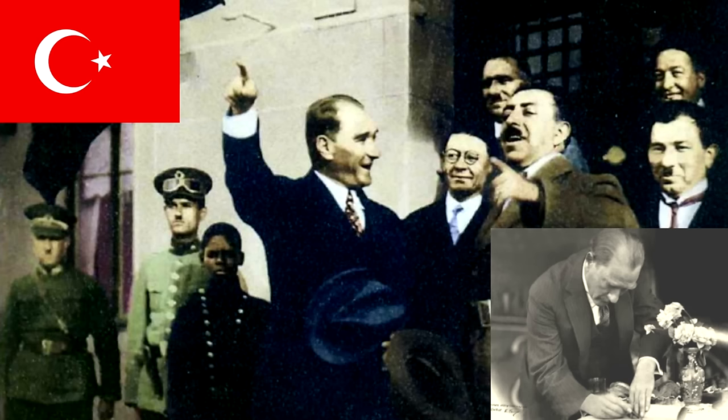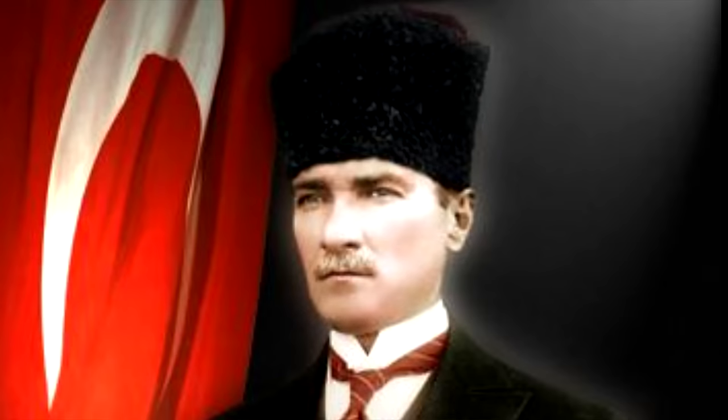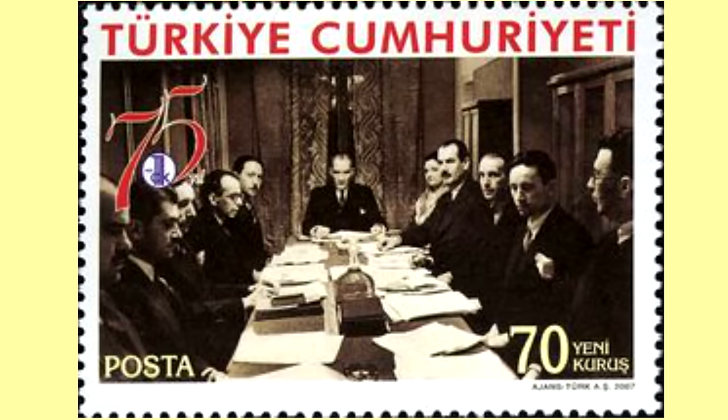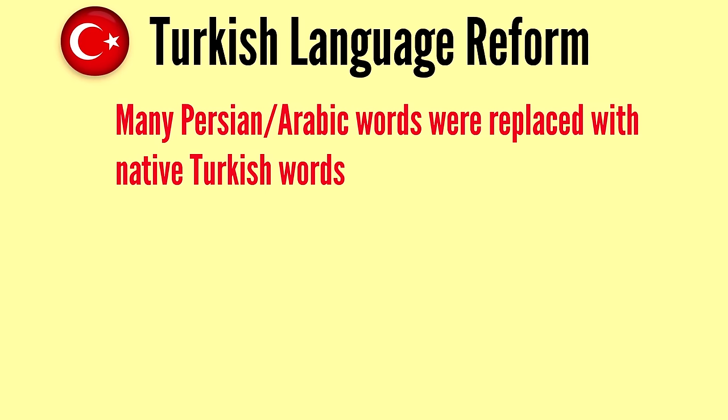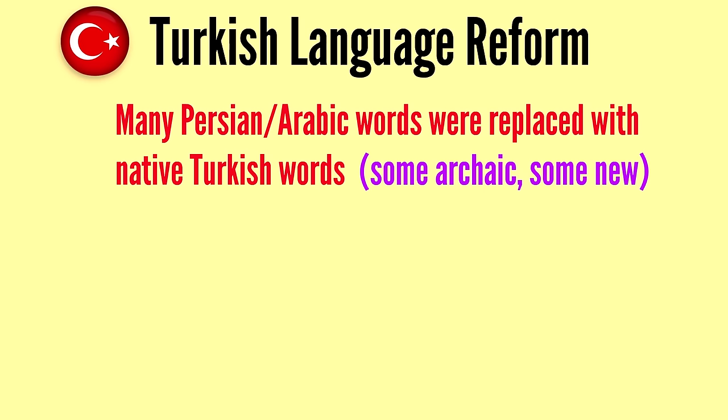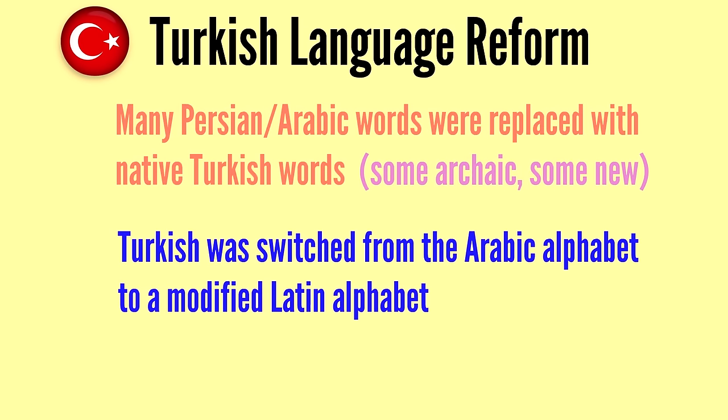When the modern Republic of Turkey was founded in 1923, Mustafa Kemal Ataturk created the Turkish Language Association to initiate a reform of the Turkish language. He essentially got rid of Ottoman Turkish and replaced it with a new standard language based on the everyday common language spoken in Istanbul. An effort was made to replace Persian and Arabic words with native Turkish words — sometimes archaic Turkish words brought back to life, sometimes newly created words from Turkish roots. Turkish was also switched from the Arabic writing system to a modified Latin alphabet, much more suitable for reading and writing Turkish.